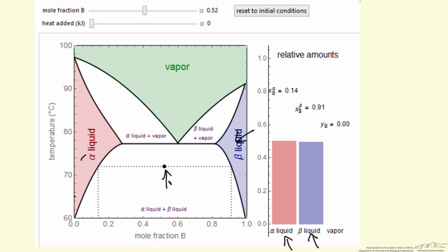The kind of question you should be able to answer if you understand this TXY diagram is what happens if I start at this point and add heat to the system to raise the temperature. What phases do I see as I move up to all in the vapor phase?